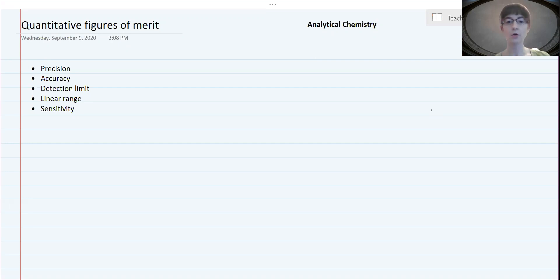We're really looking here at quantitative figures of merit, where you're trying to measure the concentration of a particular species in a sample.